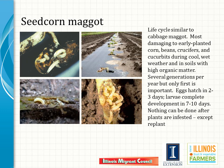Another common seed and root maggot is seed corn maggot, with a life cycle quite similar to cabbage maggot. It's most damaging to early planted corn, beans, crucifers, and cucurbits, mostly during cool, wet weather and in soils with high organic matter. There are several generations per year, but only the first is important for damaging seedlings. Eggs hatch in two to three days, larvae complete development in seven to ten days, and once you see damaged plants there's nothing you can do to rescue that crop — you must replant.